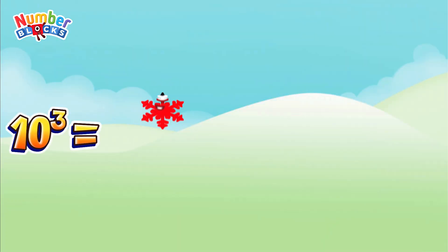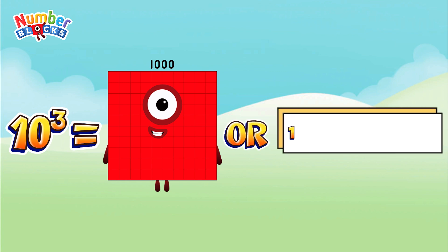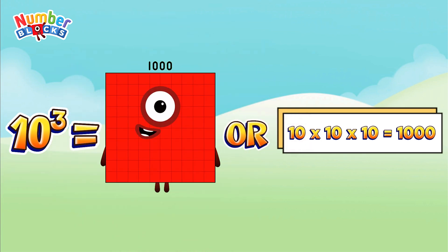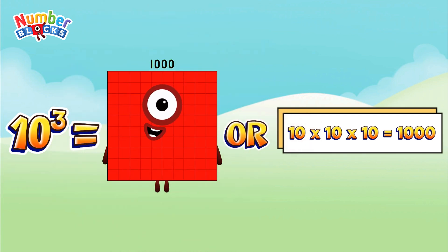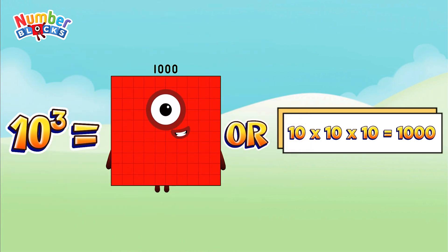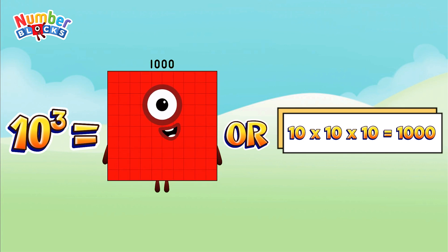10 cubed is equal to 1,000, or 10 multiplied by 10 multiplied by 10 is equal to 1,000.